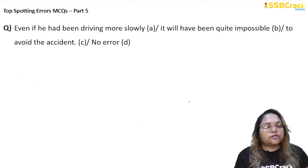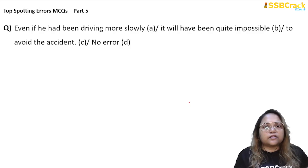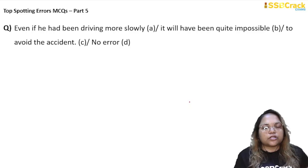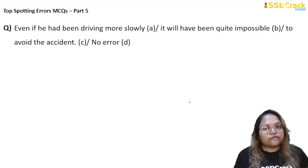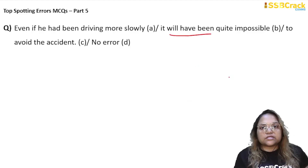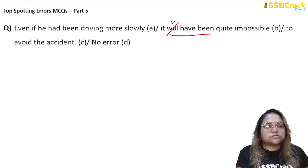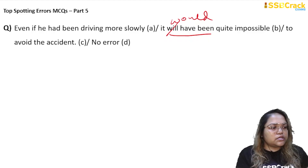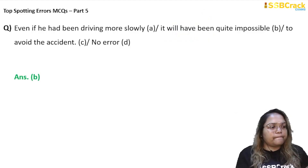Next question: 'Even if he had been driving more slowly, it will have been quite impossible to avoid the accident.' The sentence is talking about a past event — the accident happened, and he was not driving slowly. Since the entire context is past, we cannot use 'will have been' (which implies present perfect). It should be past: 'it would have been quite impossible.' So 'will' should not be used here — the answer is option B.